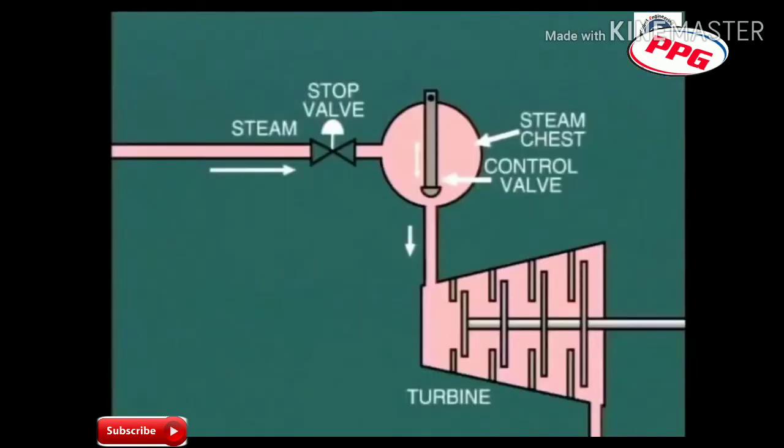In the most simple arrangement shown here, we have one control valve which, depending on its setting, allows more or less steam to flow into the turbine from the steam chest.